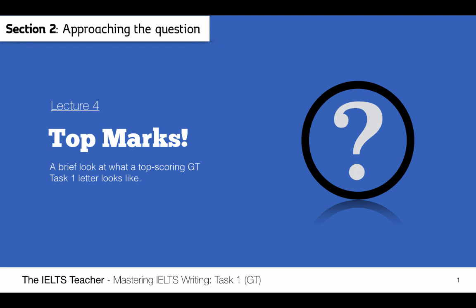In this lecture we're going to take a look at what a top scoring General Training Task 1 letter looks like. The purpose of this is so that you can see what makes up a high scoring Task 1 letter — what ingredients are needed to produce a high score. We're also looking at this model answer so you can see which parts of the course will help you for each different skill and band descriptor requirement.